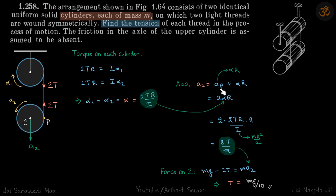So mathematically, a2 equals ap plus alpha r. ap itself is alpha r due to rotation of this cylinder.